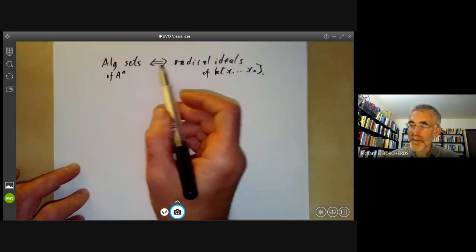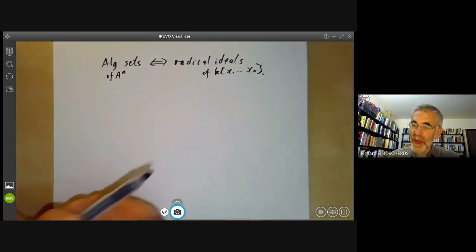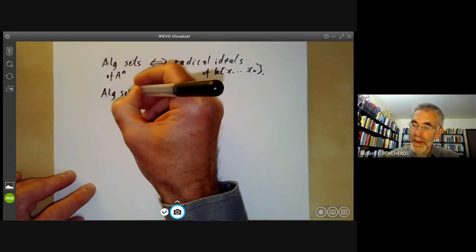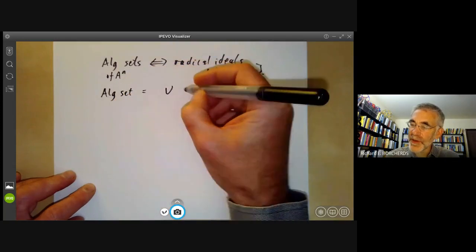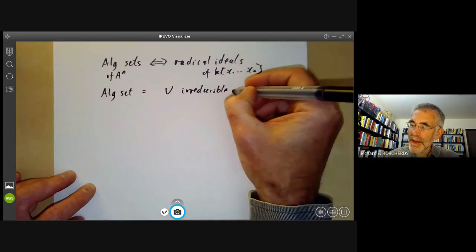So this is algebraic sets of affine space. This is just the strong version of the Nullstellensatz. We also know that an algebraic set is equal to a finite union of irreducible algebraic sets.